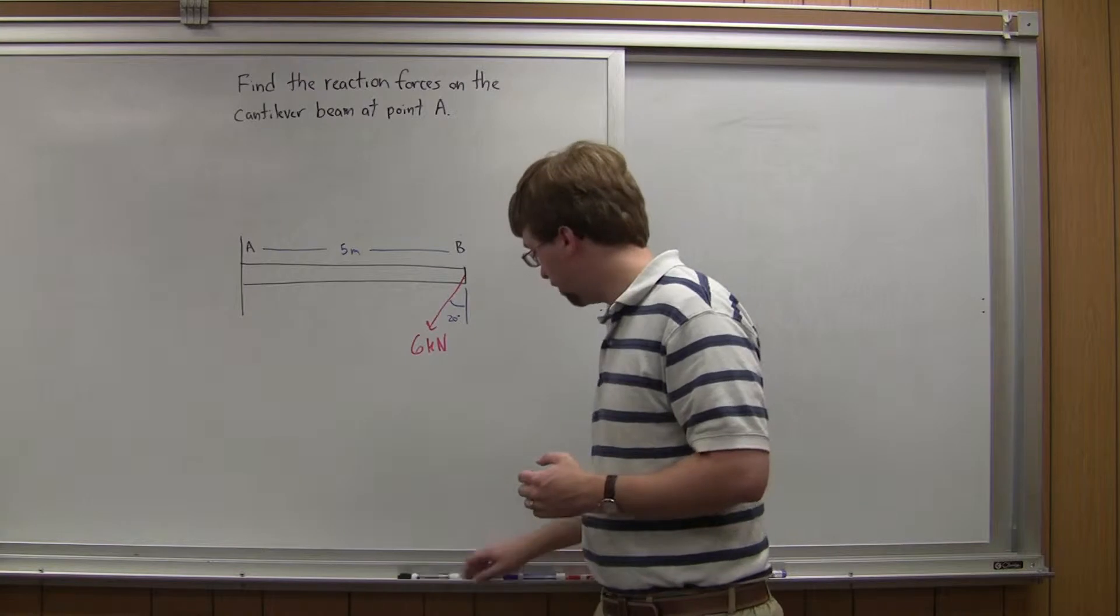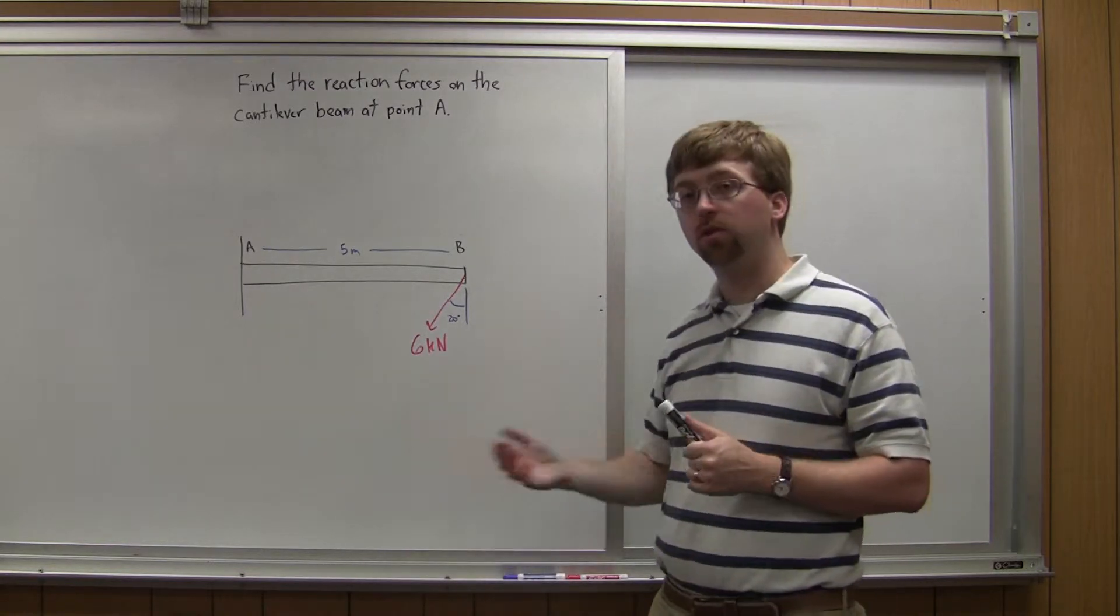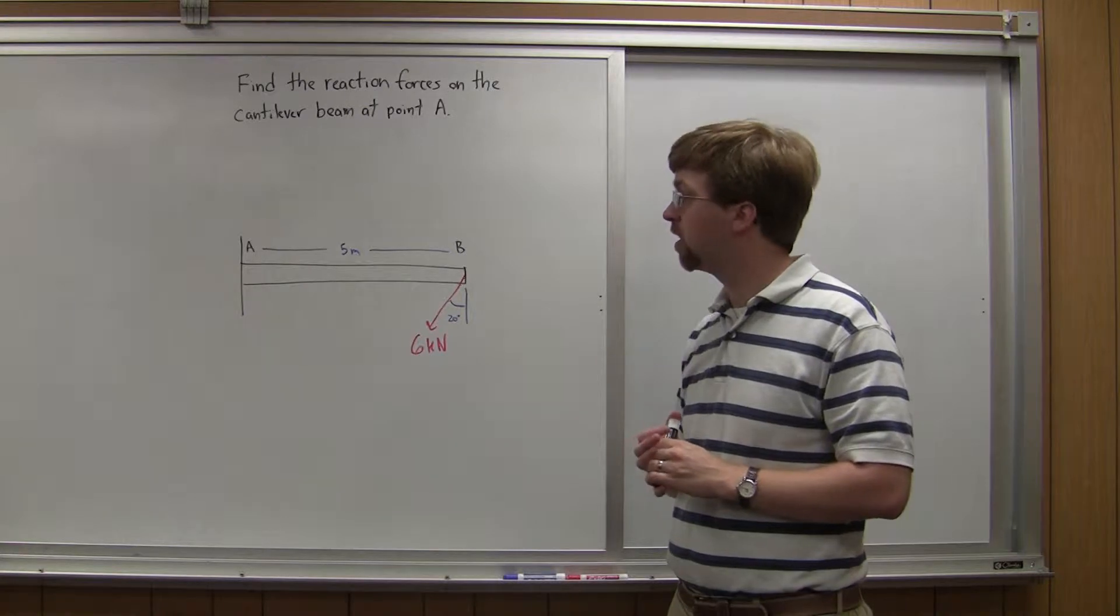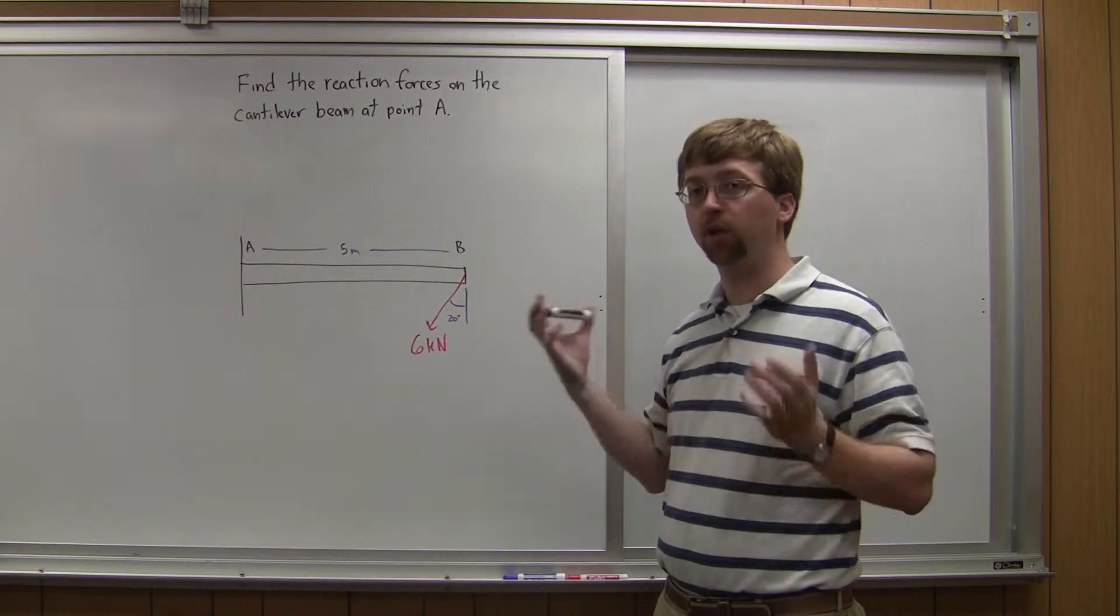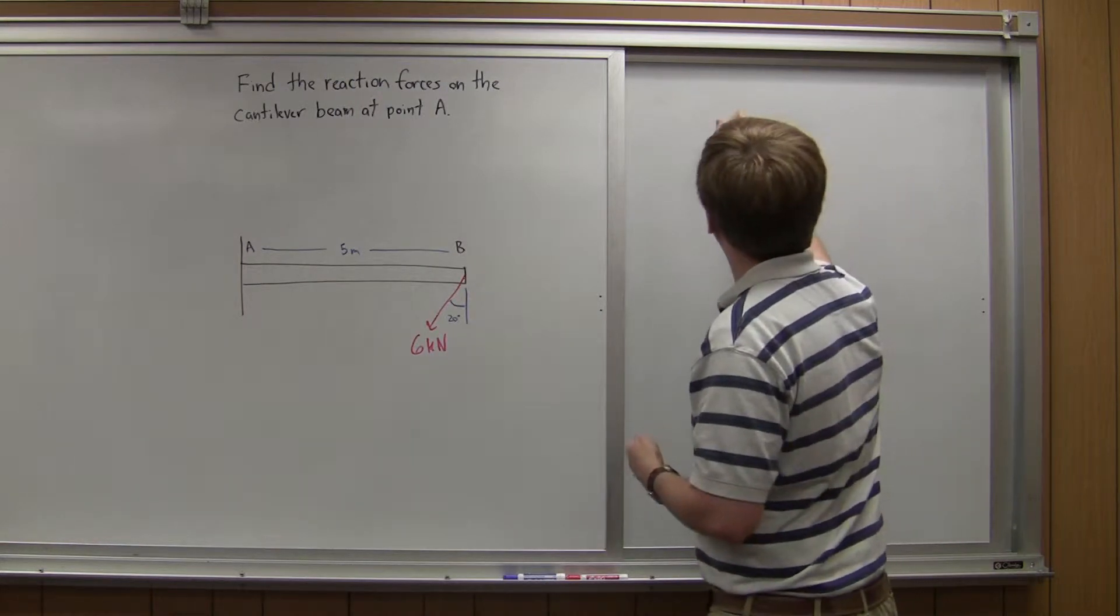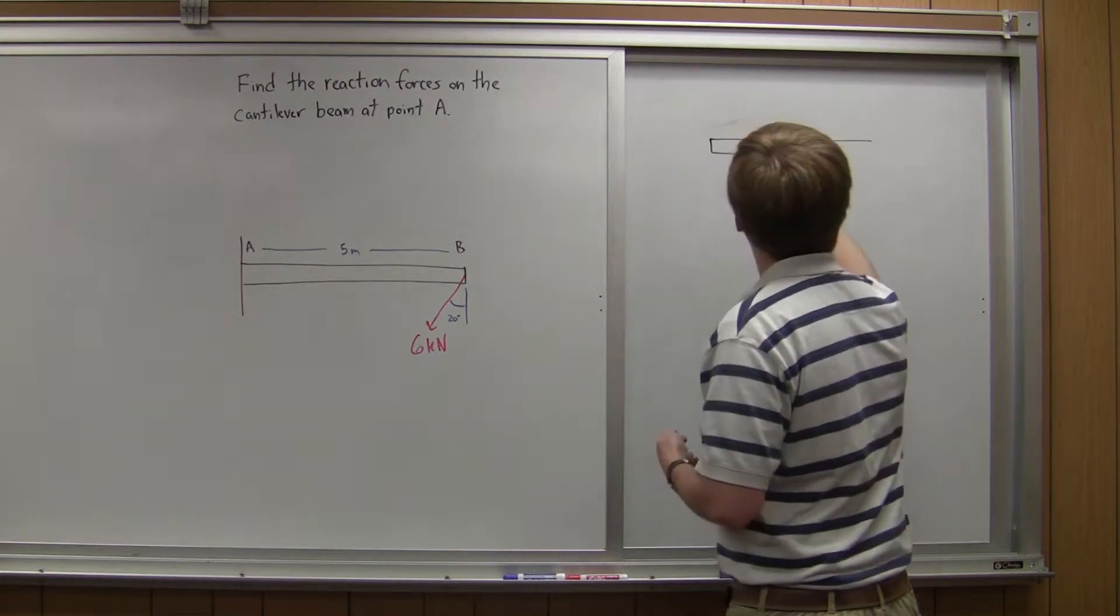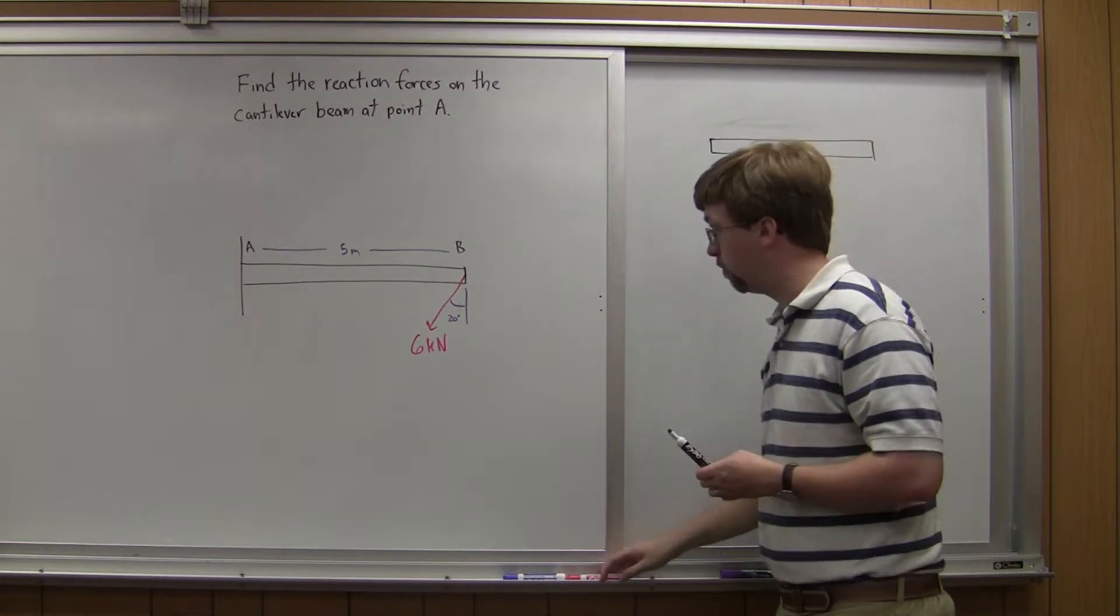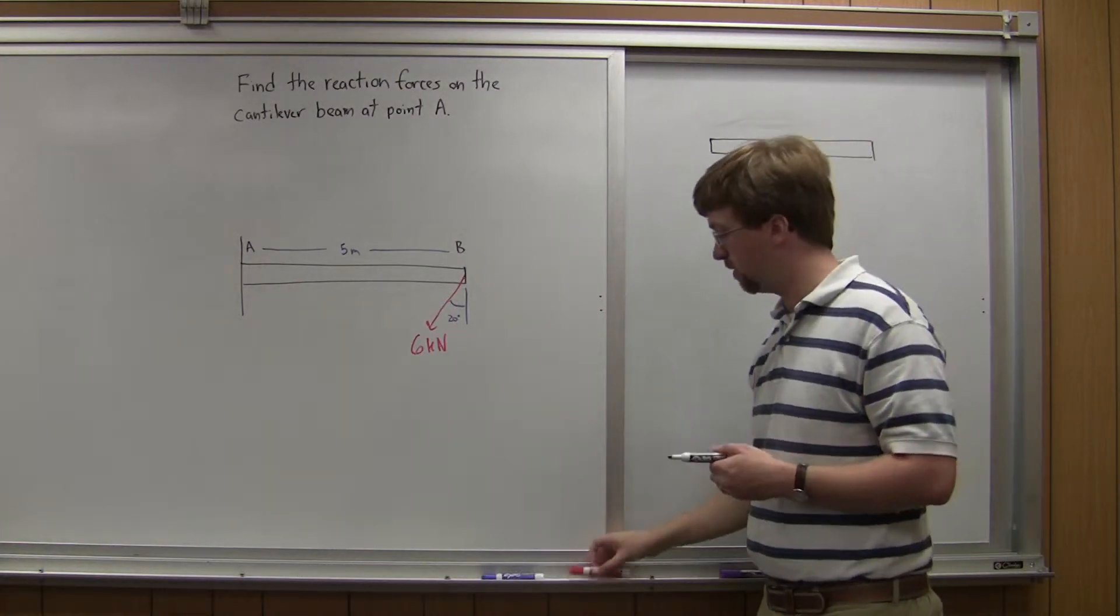With this fixed beam, we're going to do the equilibrium equations to find those reaction forces. We start an equilibrium problem with our free body diagram. We draw our beam, we know it's 5 meters long, and we're going to separate it from the wall, that's part of the environment.